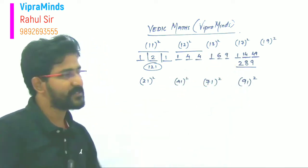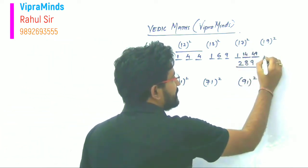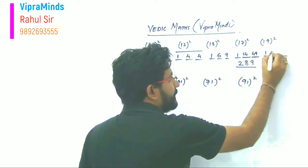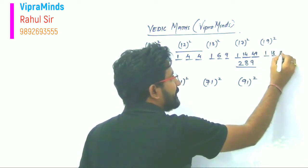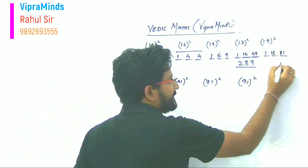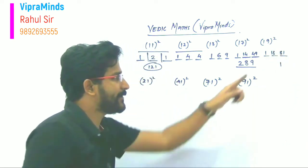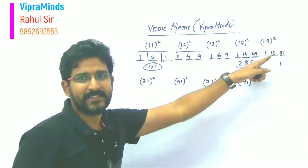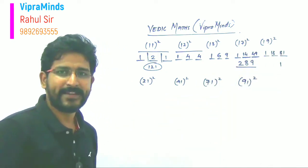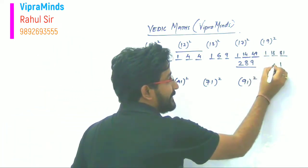Now 19 ka square. The same way, one ka square is one, nine ka double is 18, and nine ka square is 81. Now again, here the unit place we take as it is. Then we shift this 8 here. So here 8 plus 8 is 16, or in 18 if you add 8, 18 plus 8 becomes 26.